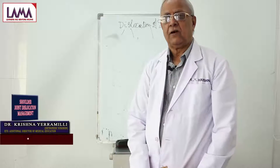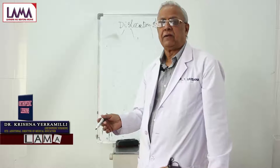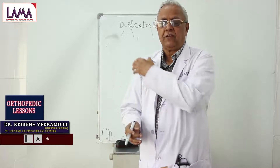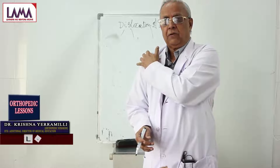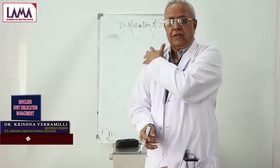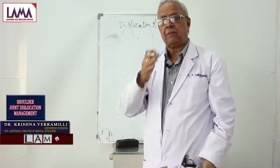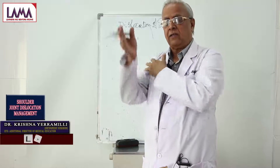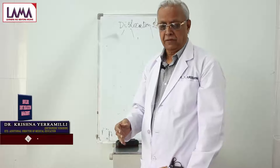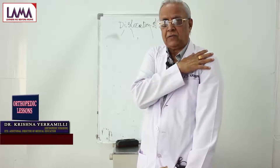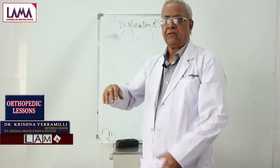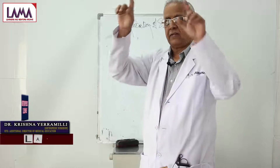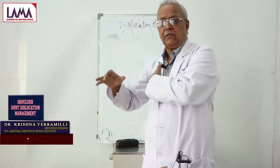There are several signs described by different people. The most important is that normally you can feel the rounded head of the humerus below and away from the acromion, but in dislocation there will be a depression in that area near the deltoid because the head is not in its correct position. Second, the patient will not be able to touch the opposite shoulder because they cannot do any internal rotation. Third, if you look at the axillary region, the girth of the axilla will appear larger on the affected side.